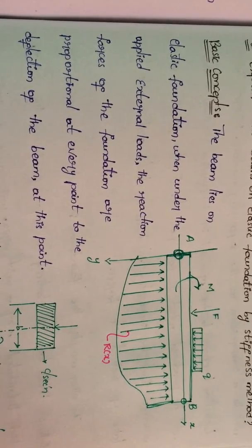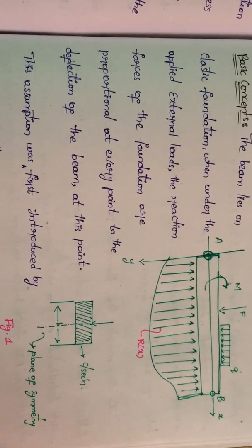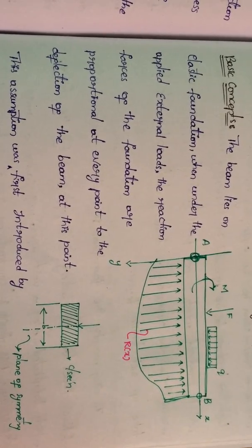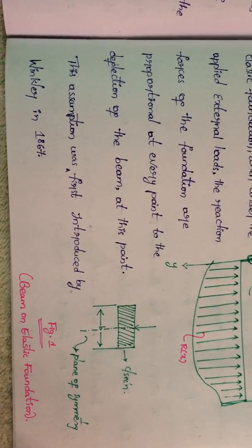Here the load is acting at point F. There is a load at point F acting downwards. And next one, the reaction R of X in the horizontal direction X and vertical direction Y at the point A at the nodal point.